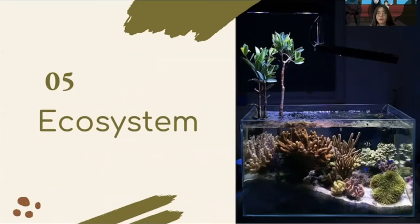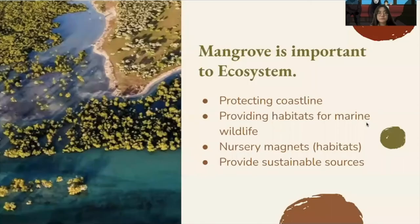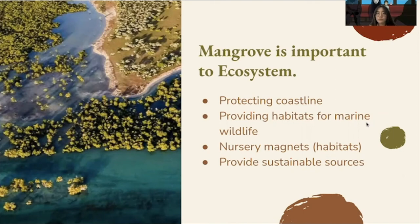I will talk about why mangrove is so important to the ecosystem. Mangroves provide valuable ecosystem services by protecting coastlines and providing habitats for marine wildlife. They are natural storm barriers — their strong, densely intertwined roots withstand tidal waves brought about by intense storm surges. They protect the shoreline from erosion by stabilizing the sand. They are also nursery grounds for fish and shellfish, providing support for a food-rich food web, and they provide a sustainable source of food and food security for nearby shoreline communities.